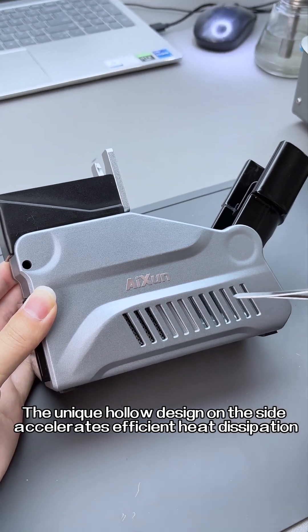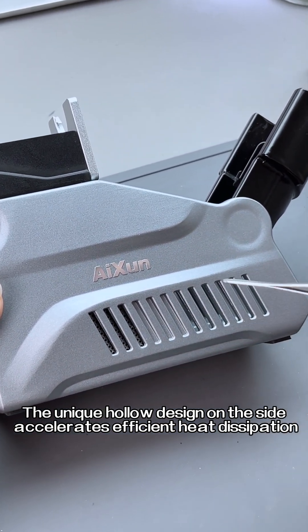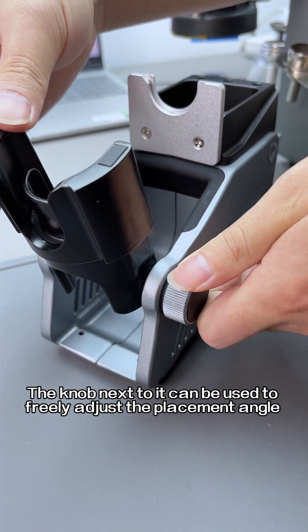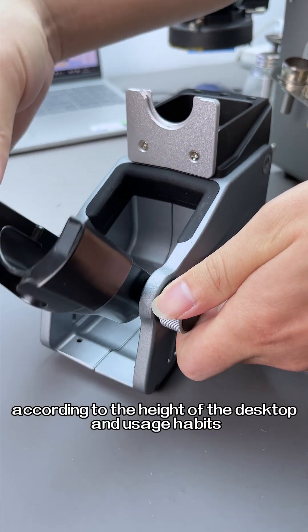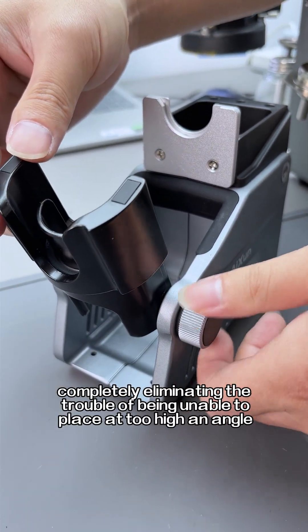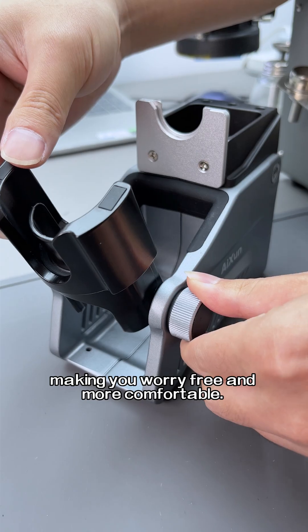The unique hollow design on the side accelerates efficient heat dissipation. When the hot air handle is in standby mode, the knob next to it can be used to freely adjust the placement angle according to the height of the desktop and usage habits, completely eliminating the trouble of being unable to place at too high an angle, making you worry-free and more comfortable.